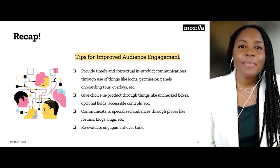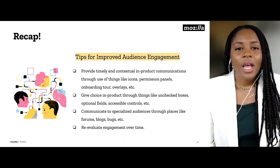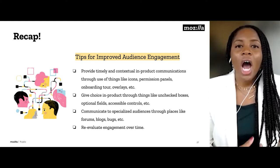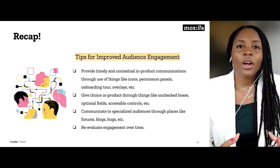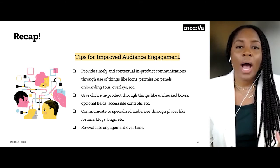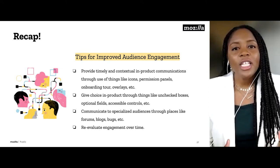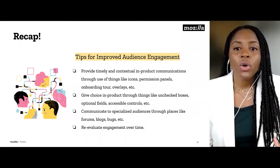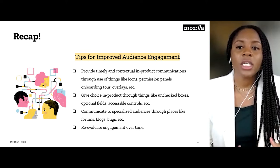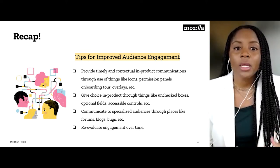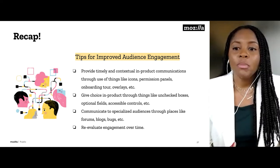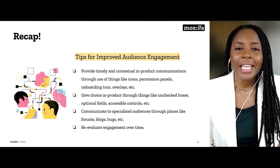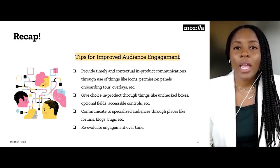Let's recap — here are some tips for improved audience engagement. First, provide timely and contextual in-product communications through permission panels, overlays, onboarding tours, and other user-friendly features. Give your customers choice within the product through unchecked boxes, optional fields, or accessible controls so they're empowered to make the decisions they want. If you have specialized audiences, communicate through forums, blogs, or bug reporting. And remember to re-evaluate your engagement over time.